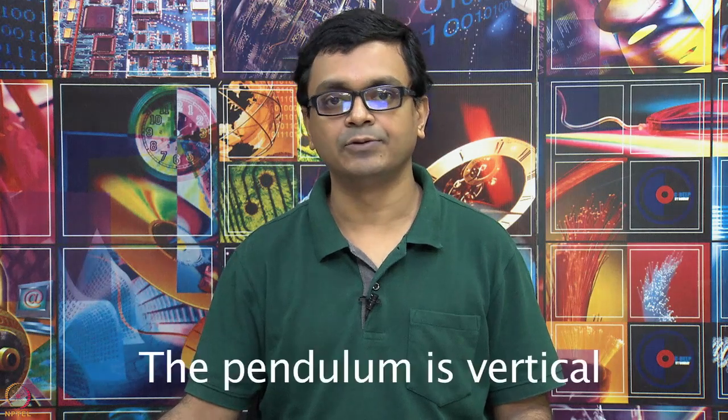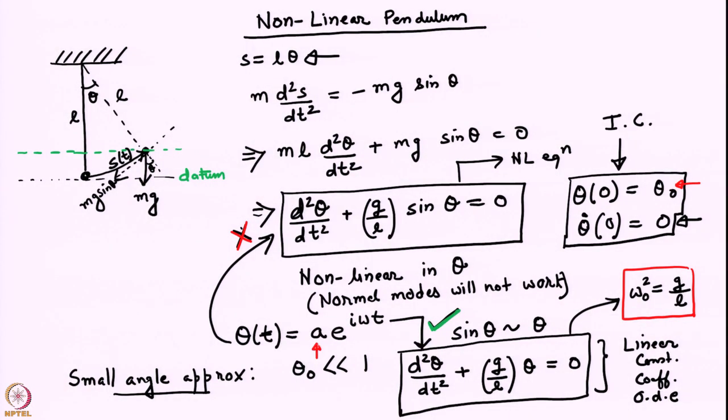Here the equilibrium state is one where the pendulum is vertical — that is the base state. When we write θ = a·e^(iωt) on the linearized equation, it works and leads to a frequency relation which tells us that ω₀² = g/L. The amplitude a has to be determined from initial conditions and is in general a complex number.